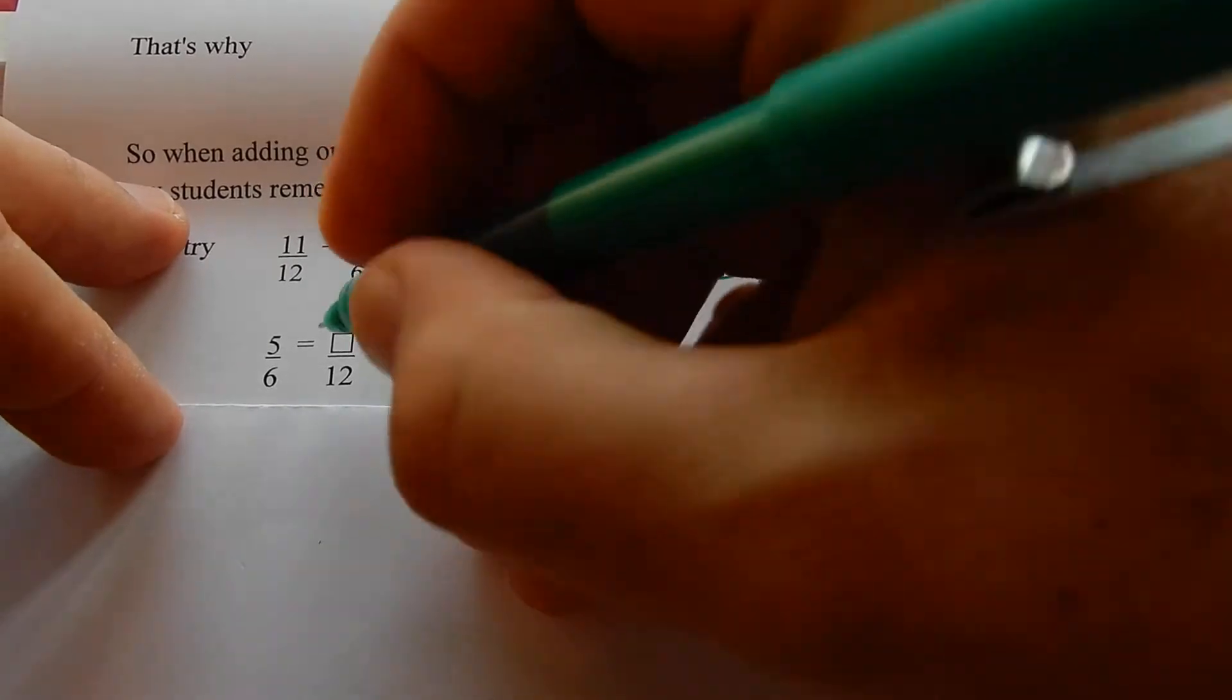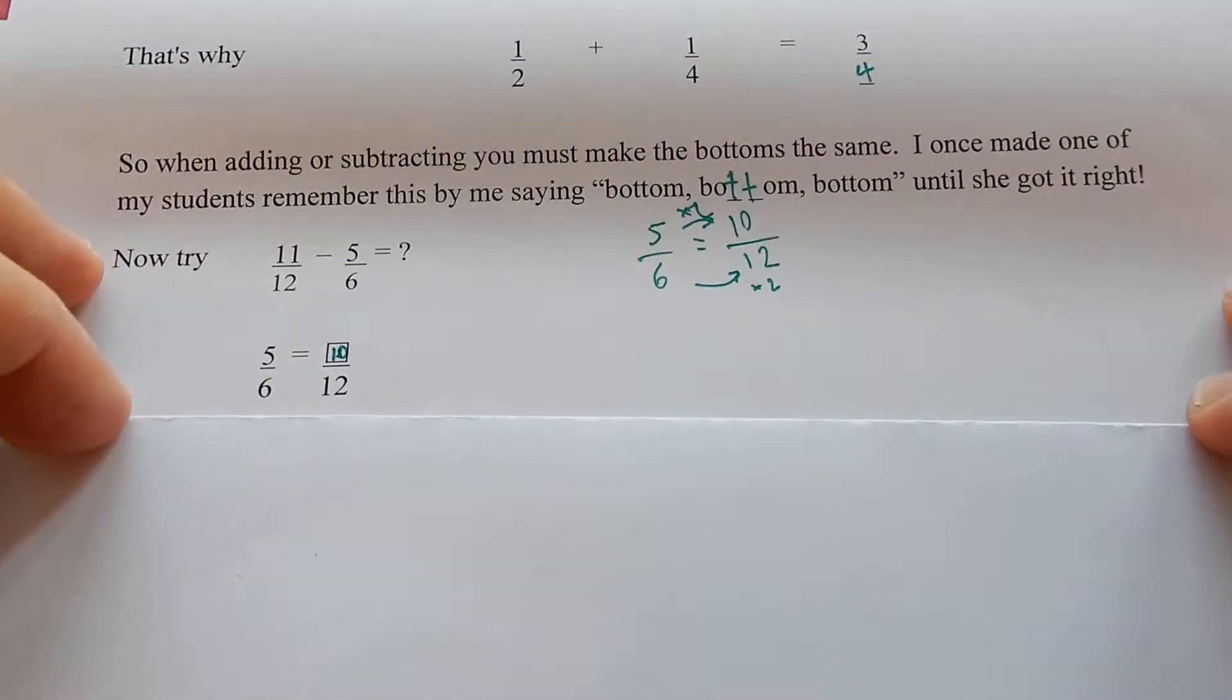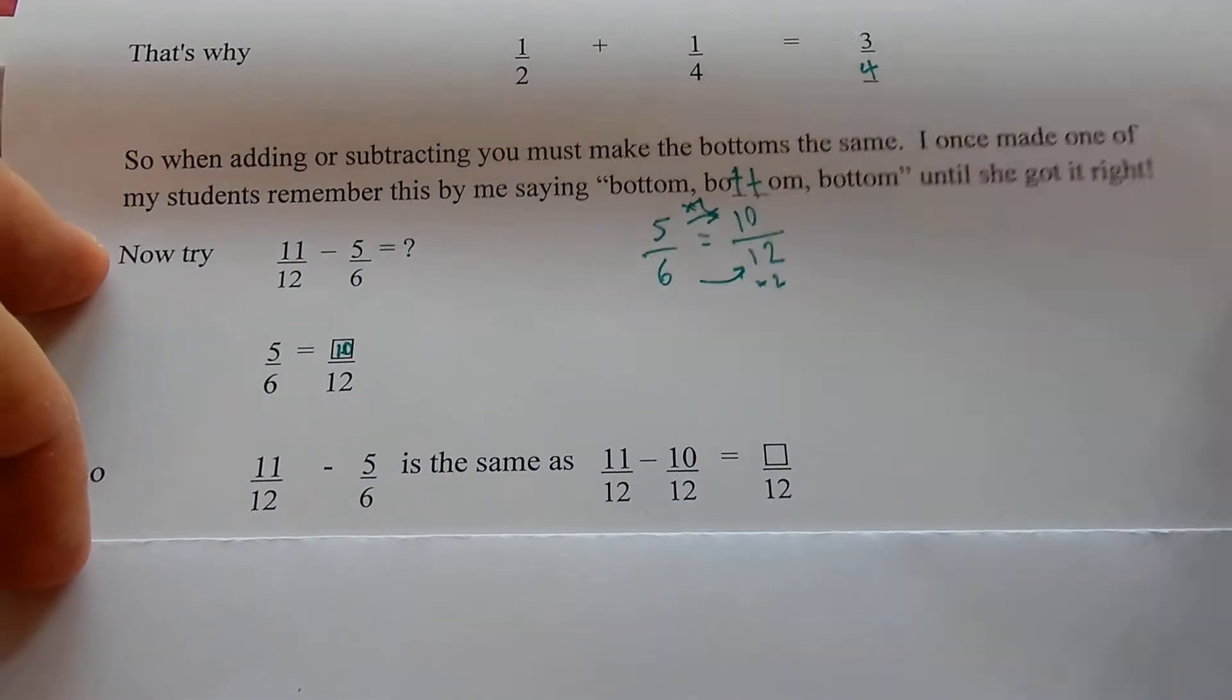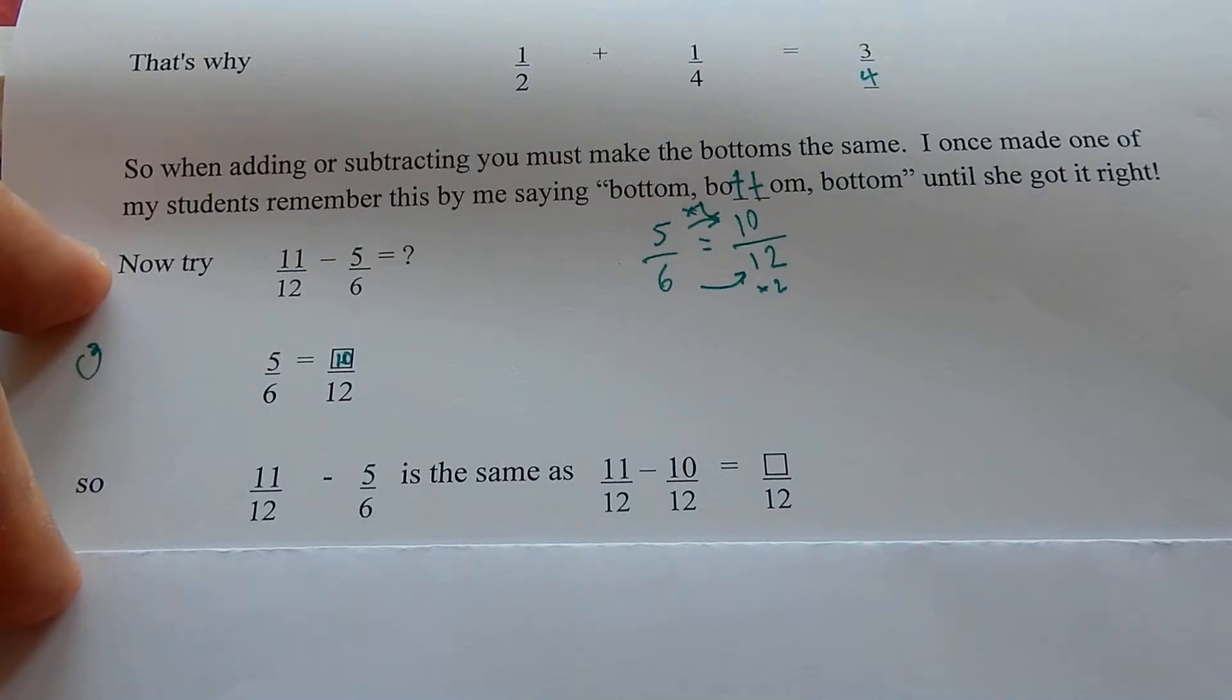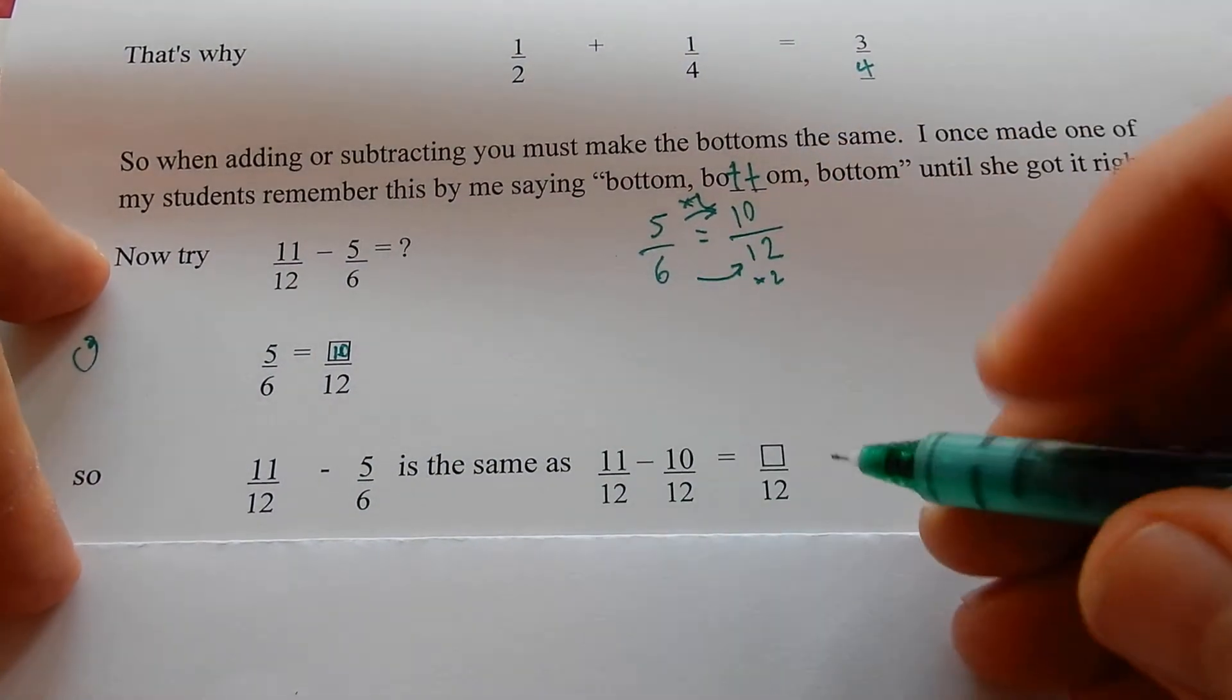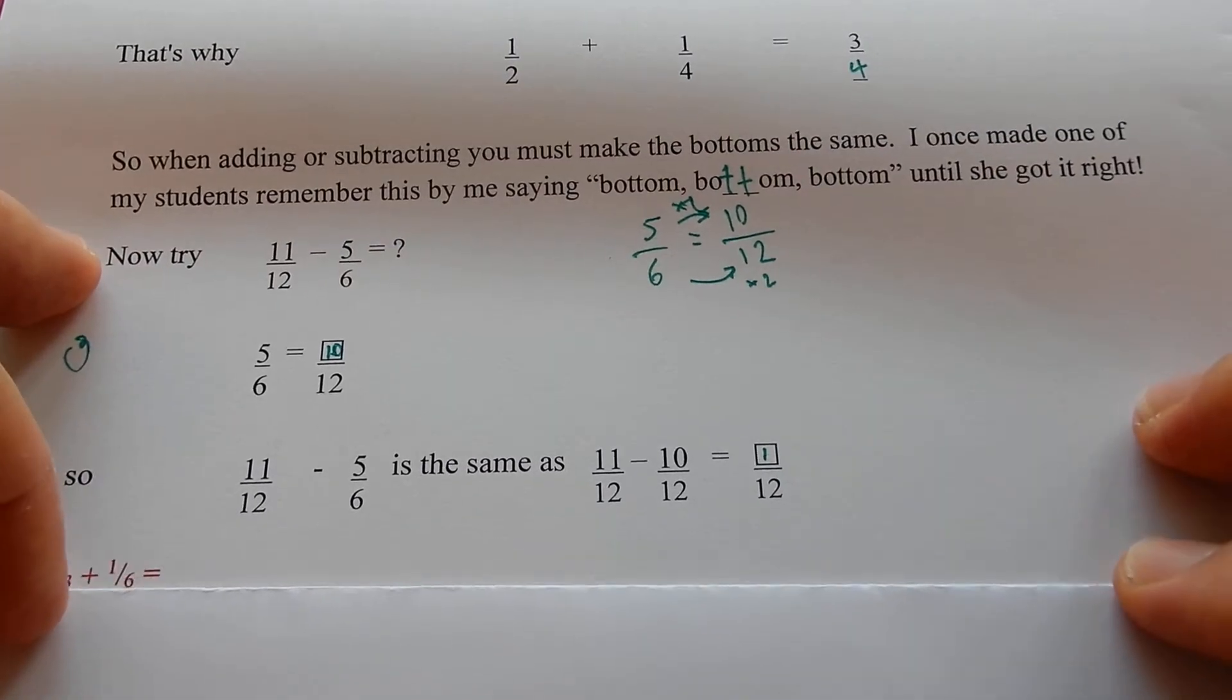Five sixths is ten twelfths. Times two the top, times two the bottom. So eleven twelfths minus five sixths is the same as eleven twelfths minus ten twelfths, which is one twelfth. Good.